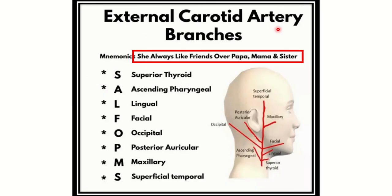Here are the mnemonics for the branches of the external carotid artery according to their origin: 'She always likes friends over papa, mama and sister.' S for superior thyroid — and the superior thyroid artery is the first branch — then A for ascending pharyngeal, L for lingual artery, F for facial artery, O for occipital artery, P for posterior auricular artery, M for maxillary artery, and S for superficial temporal artery.